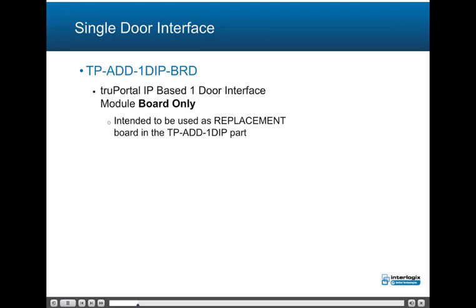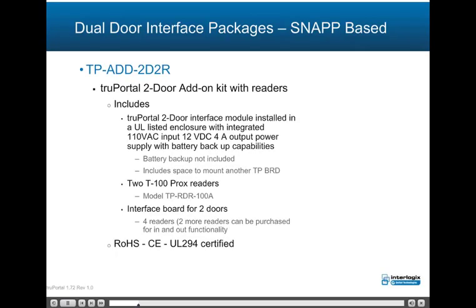The TPSYS2D1D IP-BRD is a TruePortal IP-based one-door interface module board only, intended as a replacement board in the TPSYS2D1D IP package. The TPA-DD2D2R dual-door interface package is RS-485 snap bus-based and includes a TruePortal 2-door interface module installed in a UL-listed enclosure with integrated 110V AC input, 12V DC 4A output power supply with battery backup capabilities. It features an interface board for two doors, four readers, with two more readers available for in and out functionality, and is ROHS, CE, and UL294 certified.